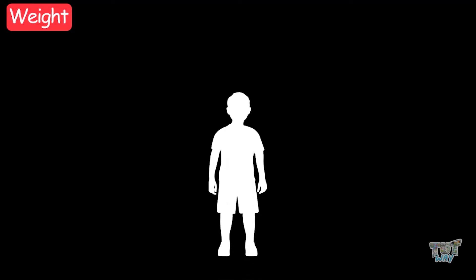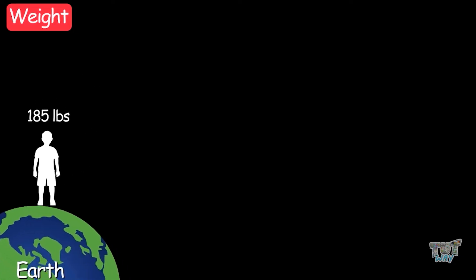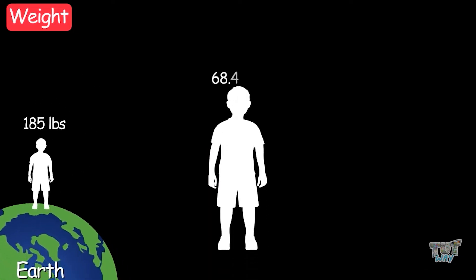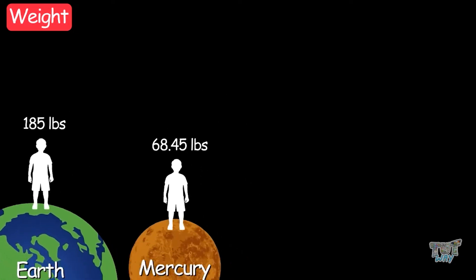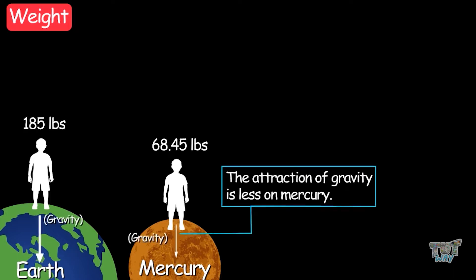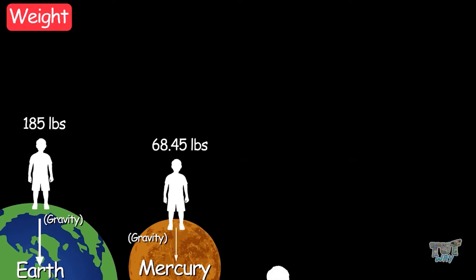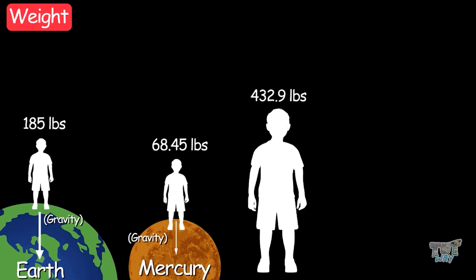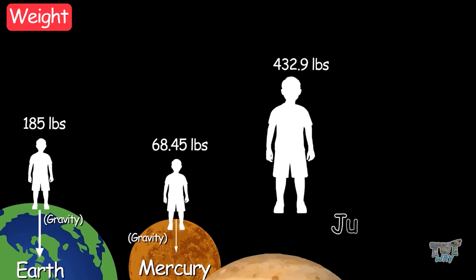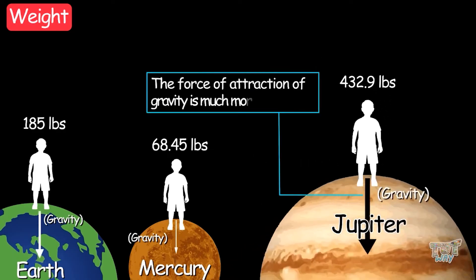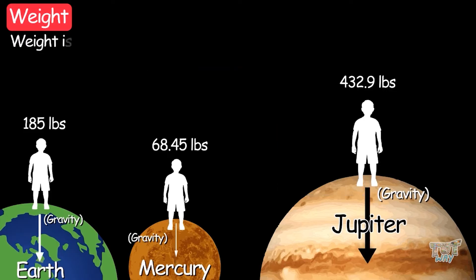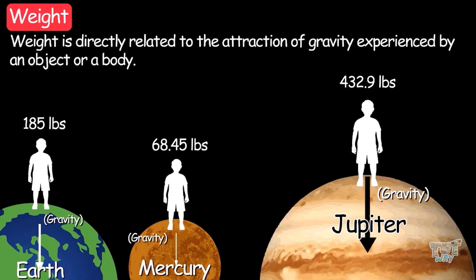Here is a very interesting example. If a person weighs 185 pounds on earth, he would weigh 60.45 pounds on Mercury, because the attraction of gravity is less on Mercury. So the same person will be 432.9 pounds on Jupiter, because the force of attraction of gravity is more on Jupiter. So weight is directly related to the attraction of gravity experienced by an object or a body.